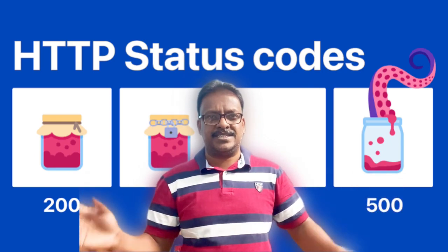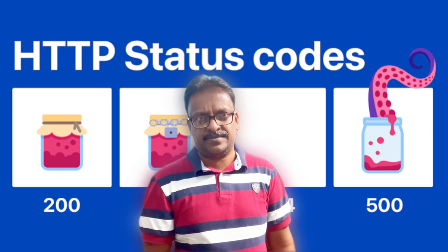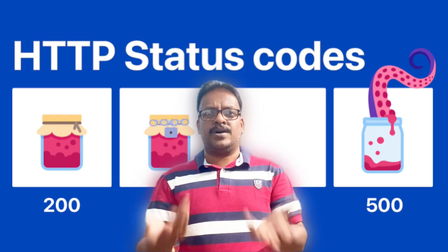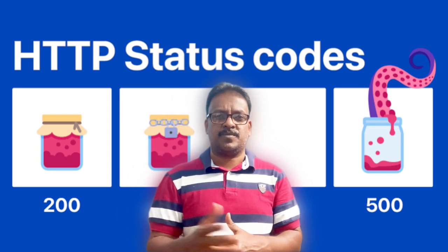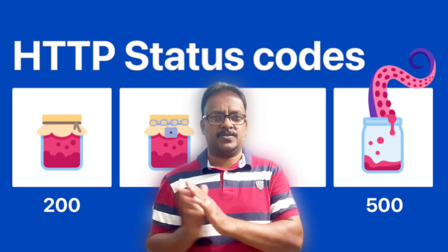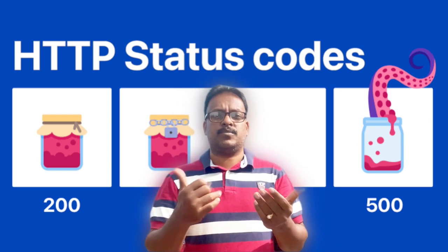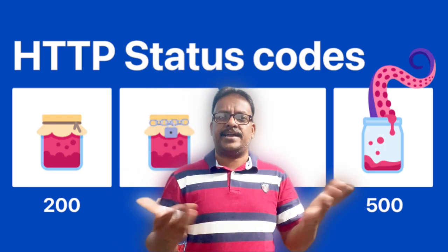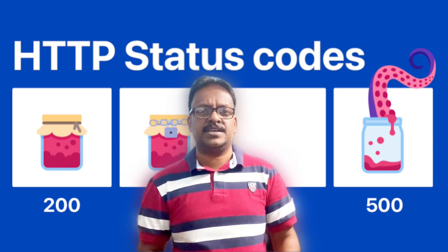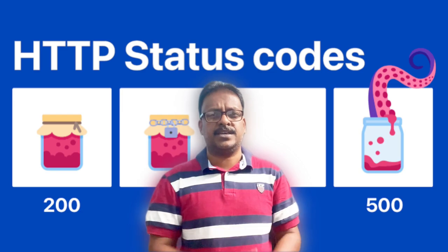Let's start with the 200 series status codes, which fall under successful responses from the server. We have 200, 201, and 204. Status code 200 means you sent a request from the client, the request is okay, and it was successful. Status code 201 means you sent a POST request for the creation of a record to the server, and the record was created successfully.